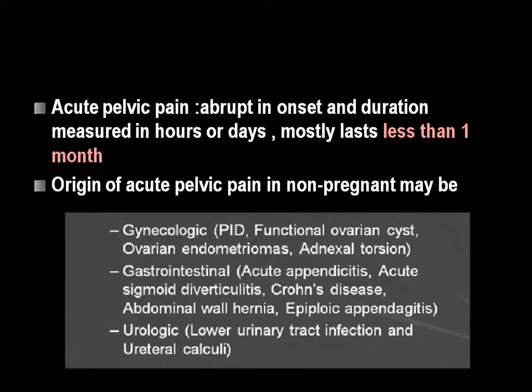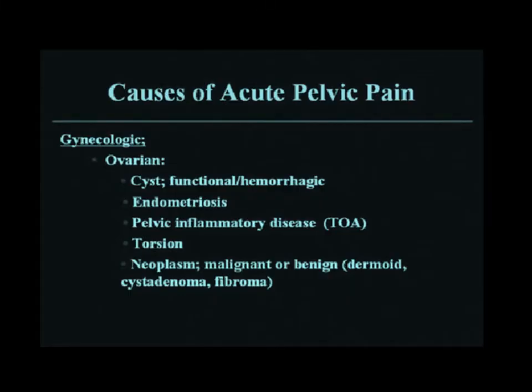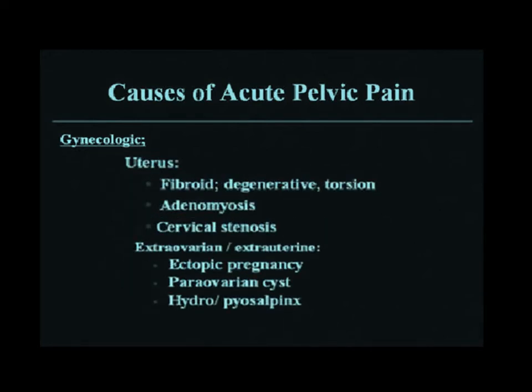We are going to focus on the gynecologic causes. These include ovarian causes like cysts (functional or hemorrhagic), endometriosis, pelvic inflammatory disease, torsion, and neoplasms (malignant or benign). Uterine causes include fibroids with degeneration or torsion, adenomyosis, and cervical stenosis. Extra-ovarian and extra-uterine causes include ectopic pregnancy, para-ovarian cysts, and hydrosalpinx.